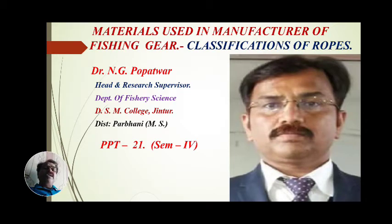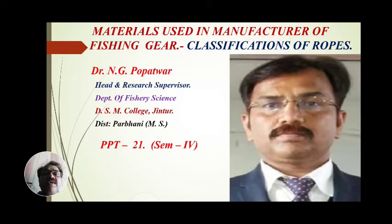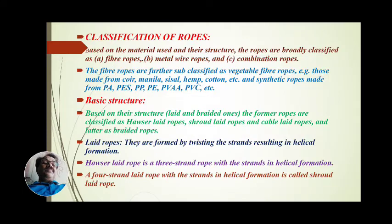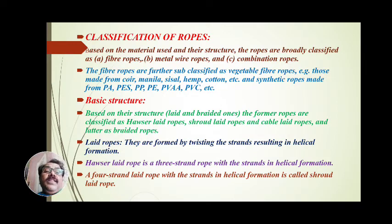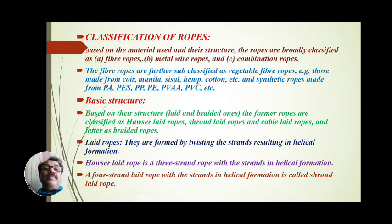In today's part — materials used in manufacture of fishing gear — we will study the classification of ropes: how these ropes are classified, according to which criteria and on which basis. Classification of ropes is based on the material used and their structure. The ropes are broadly classified as fiber ropes, metal wire ropes, and combination ropes.